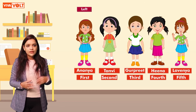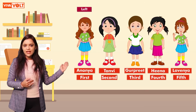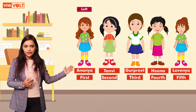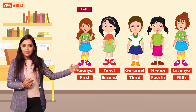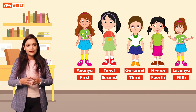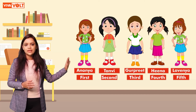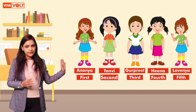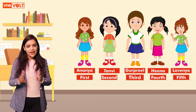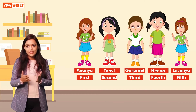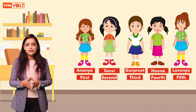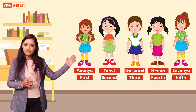Now the series will change as shown: Ananya, Tanvi, Gurpreet, Henar, Lavanya. Ananya and Tanvi remain at the same positions, first and second. Gurpreet comes at the third position, and Henar comes at the fourth position. Lavanya also remains at the fifth position.